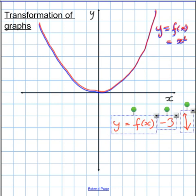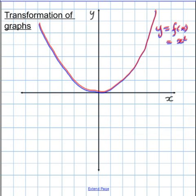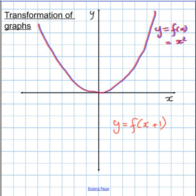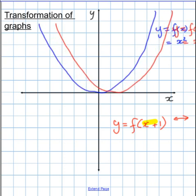Now what about if the number added or subtracted have been inside the bracket, so we'd have y equals f of x plus one? Well, it's inside the bracket so it's going to affect things horizontally. It's an add number or subtract number, remember they always are shifts or translations, so I shift it.